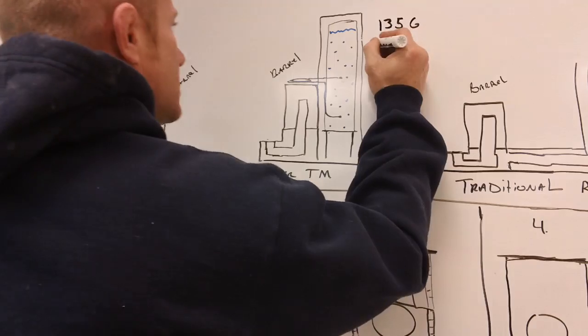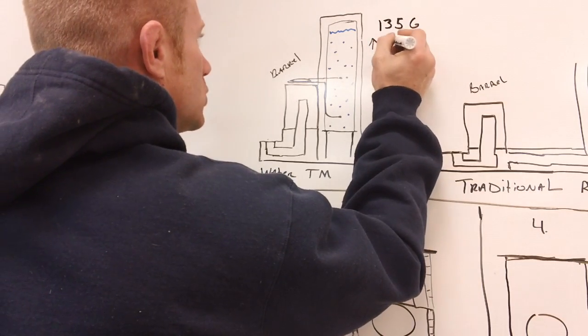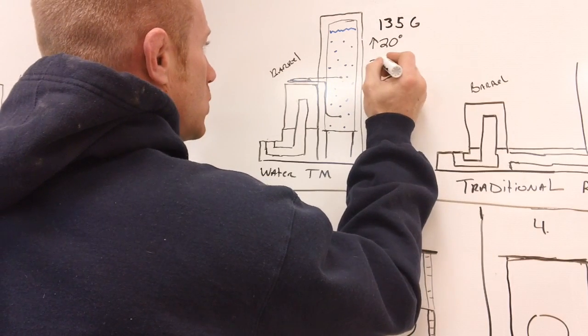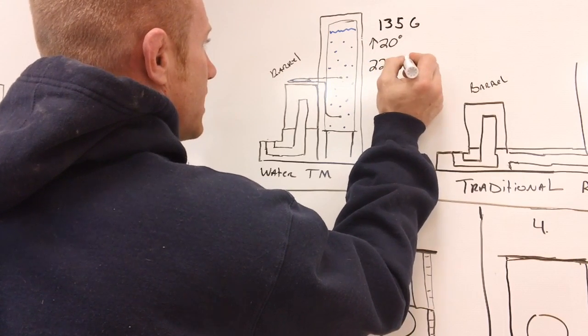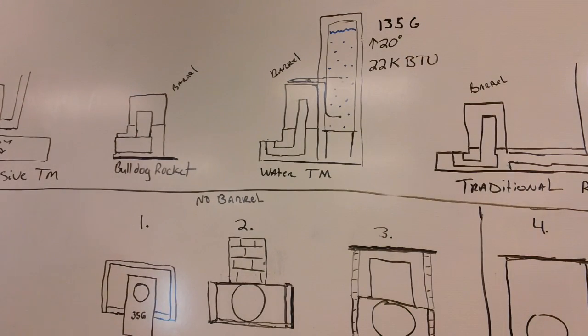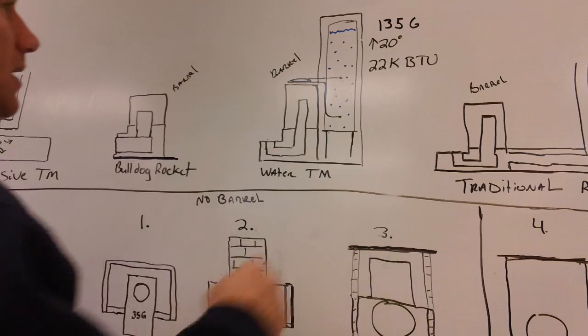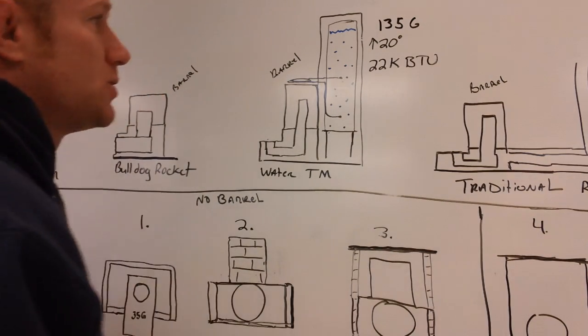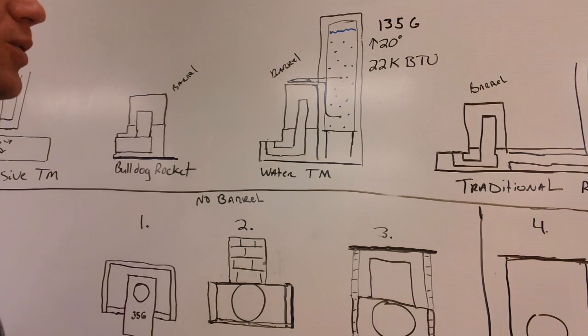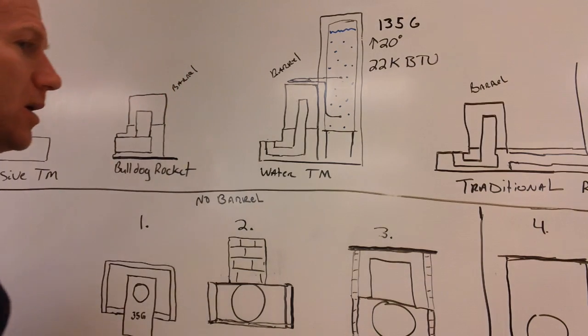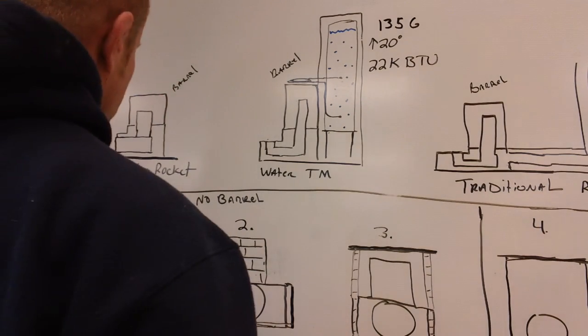If you raise 135 gallons 20 degrees, you store 22,000 BTUs. So if you've got a 250-gallon tank in here, you'd be storing pretty close to 50,000 BTUs. A 250-gallon tank is somewhere 30 inches diameter, about 6 foot tall.